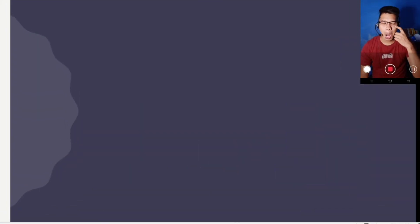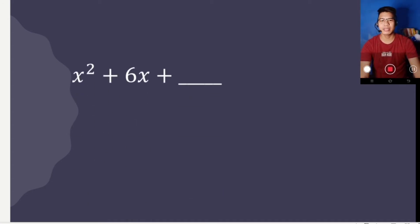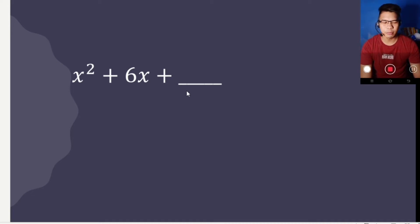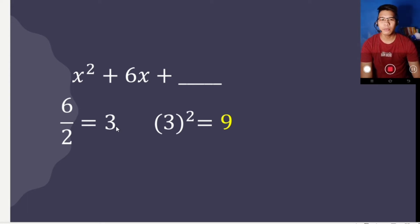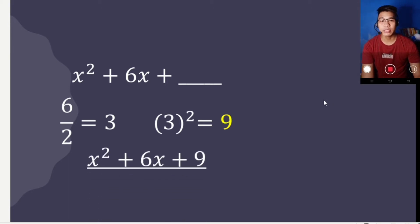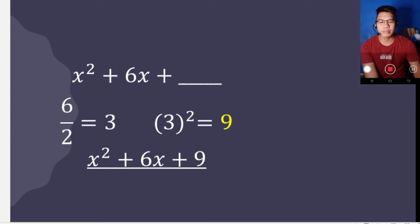Let's start. Suppose we are given x squared plus 6x plus blank. Our objective is to find the third term of this perfect square trinomial. We get the numerical coefficient of the middle term, which is 6, and divide it by 2, which equals 3. After dividing, we square the quotient: 3 squared equals 9. So 9 is now the third term, giving us x squared plus 6x plus 9.